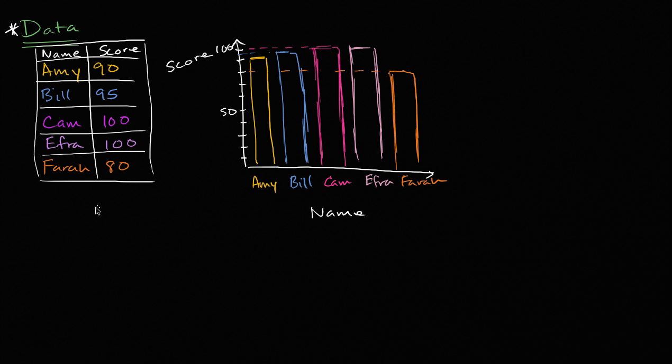And there's even other ways you can have some of this information. Sometimes you might not even know their names, and so then it would be less information, but it might just be a list of scores. The professor might say, hey, here are the five scores that people got on the exam: 90, 95, 100, 100, and 80. This would be less information than the data in the bar graph or the table because we only know the list of scores.